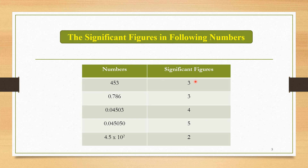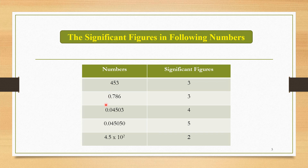Now we apply this concept to particular numbers. The first number is 453 — the significant figures are equal to 3, because all these digits are certain. The second number is 0.786 — the significant figures are again 3, because the initial zero is neglected according to rule one, leaving the remaining digits 7, 8, and 6 as significant.